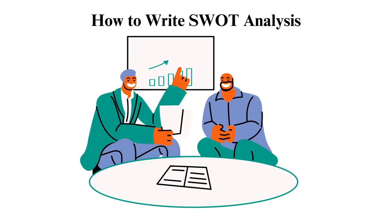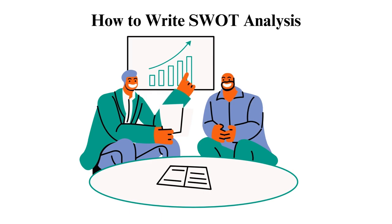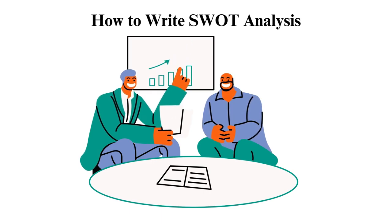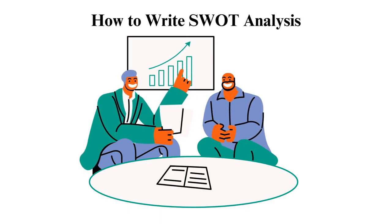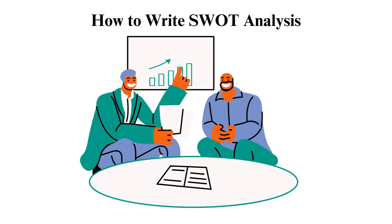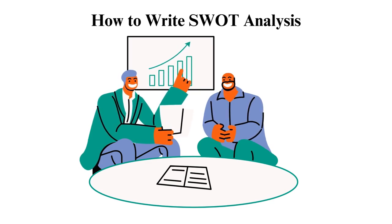The SWOT tool has several elements: strengths, weaknesses, opportunities, and threats. These elements are classified as internal and external environmental factors of a business.